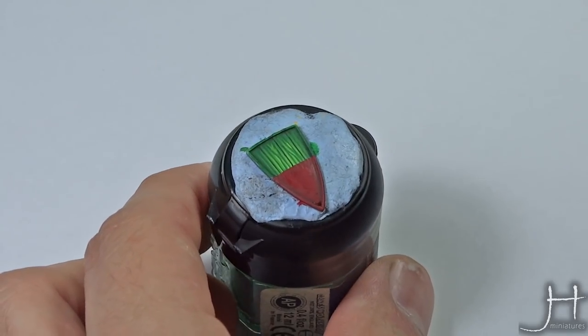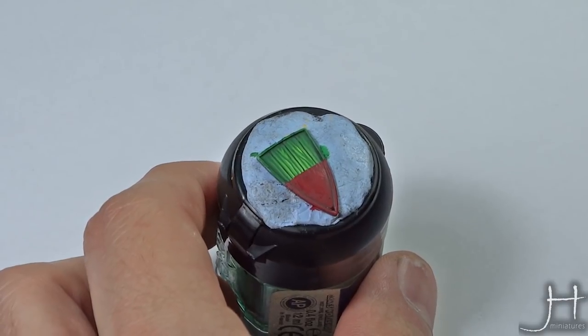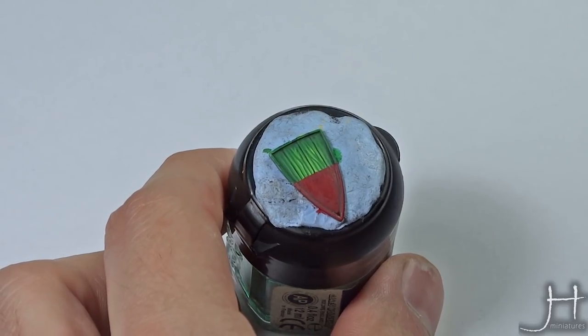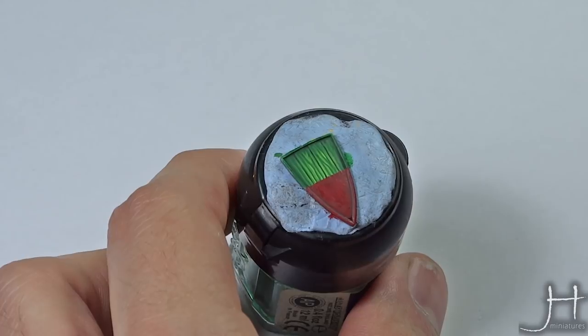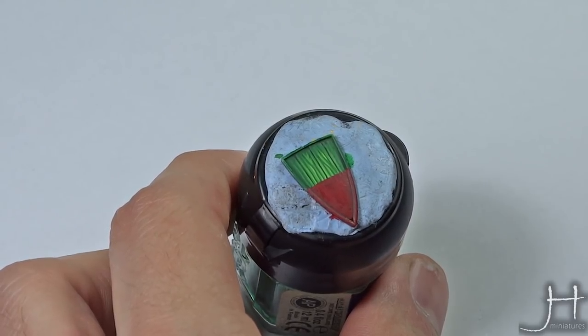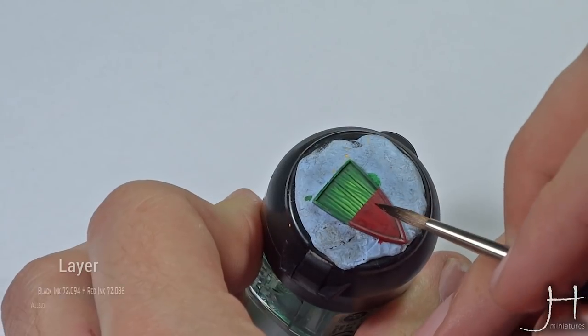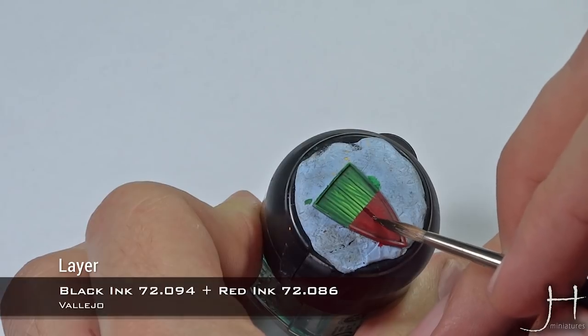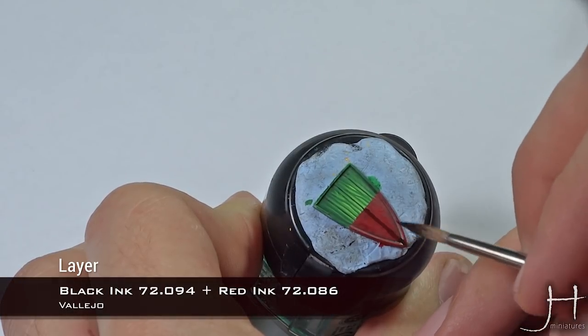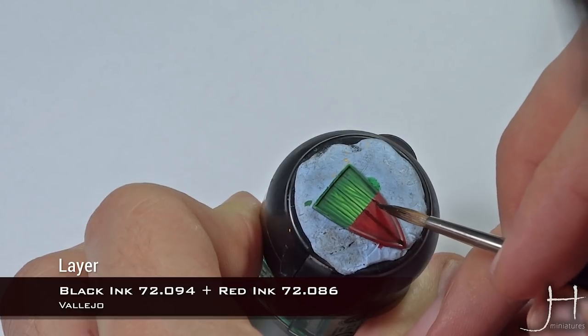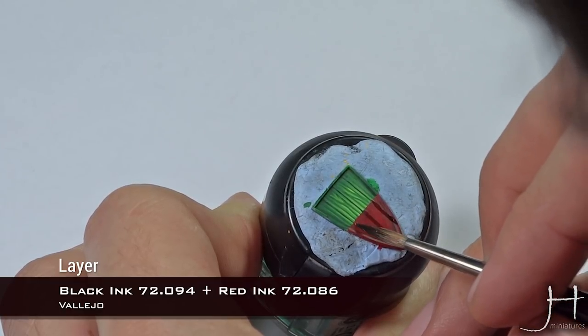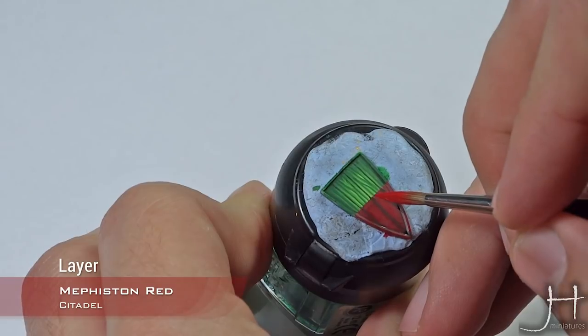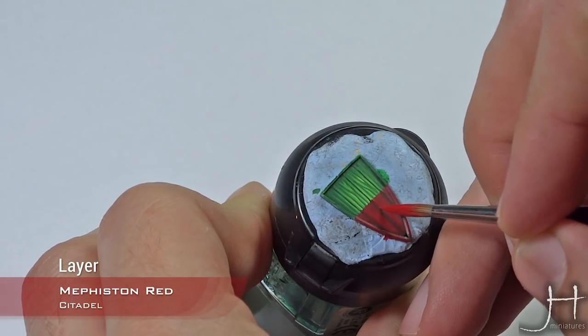Once the second coat of wash is dry, again we will just define the panels. For this I'm using a mix of Vallejo Gaming Black and Gaming Red in two parts of red and one part of black, because black is very intense. We will do the same as we did on the green, not being careful, just applying it. Be very careful though when reaching the green.